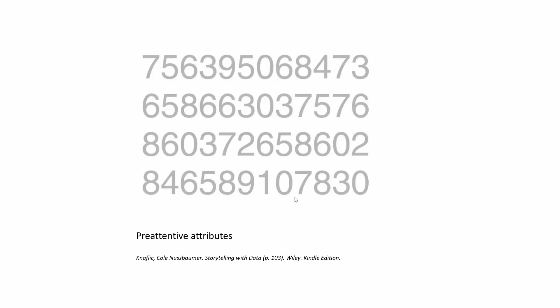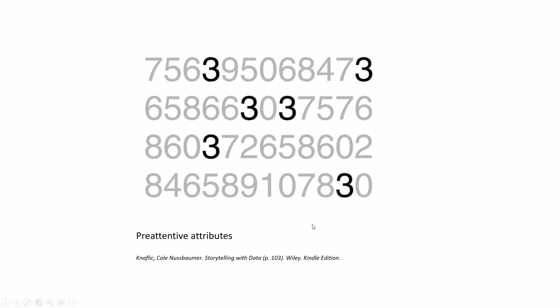We use iconic memory to help us identify pre-attentive attributes. If you look at these digits, we can find, for example, three different instances of the digit three, but I need to work hard to find them. But if I use some pre-attentive attributes related to my iconic memory — with annotations — I can easily find all six instances of the digit three in these pictures. It actually helps my iconic memory to better find them.